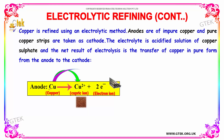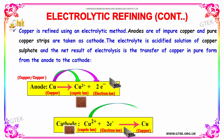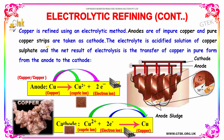I will take the typical example of copper. Copper is refined using an electrolytic method. Anodes of impure copper and pure copper strips are taken as the cathode. The electrolyte is an acidified solution of copper sulfate. The net result of electrolysis is a transfer of copper in pure form from the anode to the cathode.